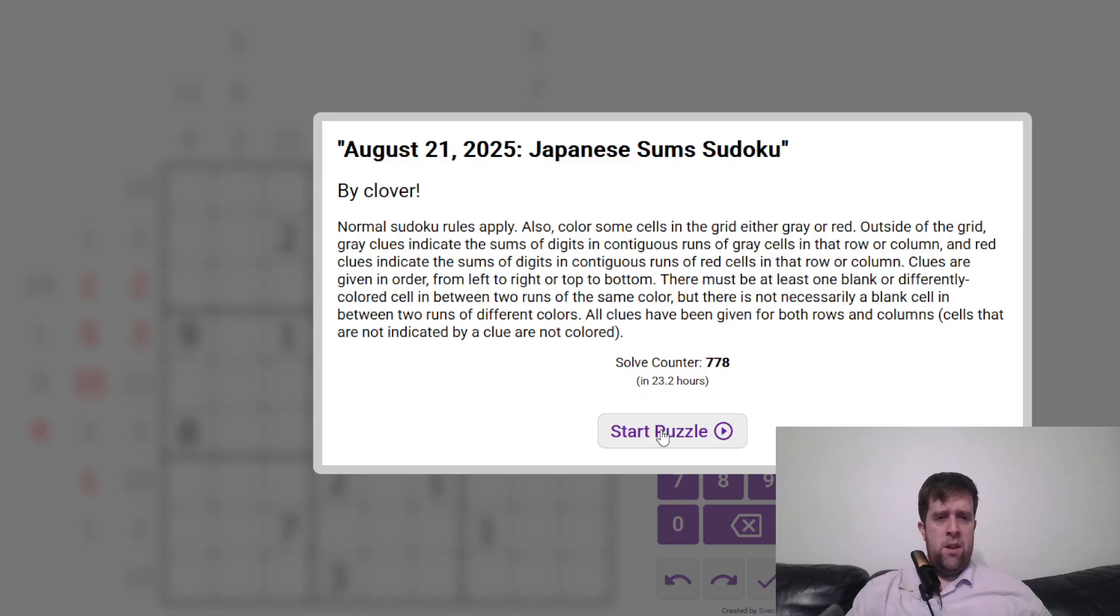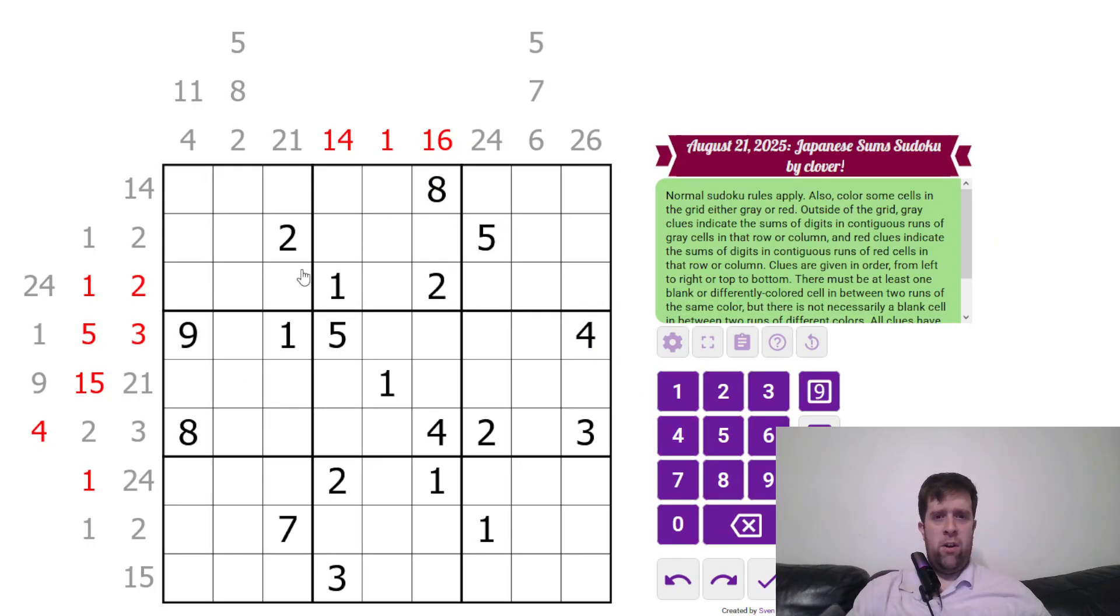That being said, I'm gonna read the rules and we're gonna get into it. This is a Japanese-sum Sudoku. Normal Sudoku rules apply - each box, each row, and each column must contain one to nine once each. Now, I'm gonna read all the rules, and then I'm gonna stop to just kind of break down the corner cases. Outside of the grid, grey clues indicate sums of digits in continuous runs of grey cells in that row or column, and red clues indicate the sums of digits in continuous runs of red cells in that row or column.